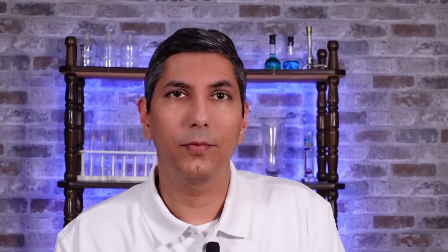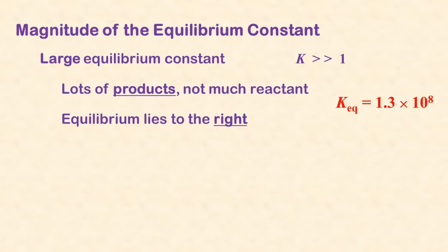If the reaction is at equilibrium, then the reaction quotient Q is equal to K, the equilibrium constant. If we calculate Q and it's not equal to K, the reaction will proceed until it attains equilibrium. When the equilibrium constant K is very large, much greater than one, we'll have lots of product and very little reactant. However, when K is very small, we'll have lots of reactant and very little product.